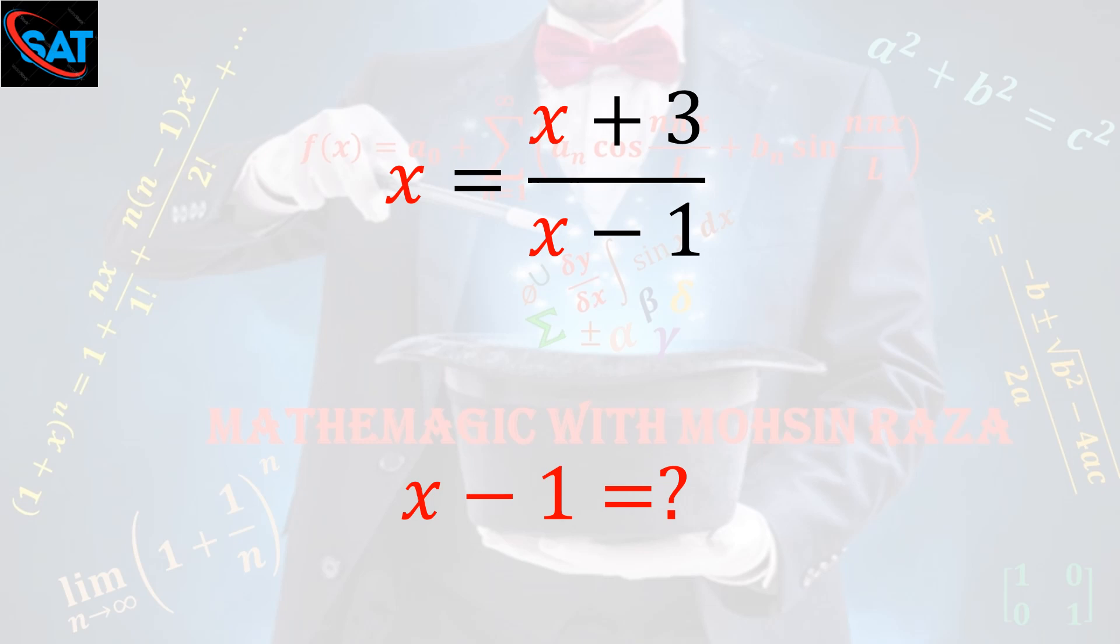Hi, welcome to my channel Mathemagic with Moussa Raza. Today I come up with a question that appears in the SAT exam. It says that if we have an expression satisfying x equals x plus 3 over x minus 1, then what is the value for x minus 1?